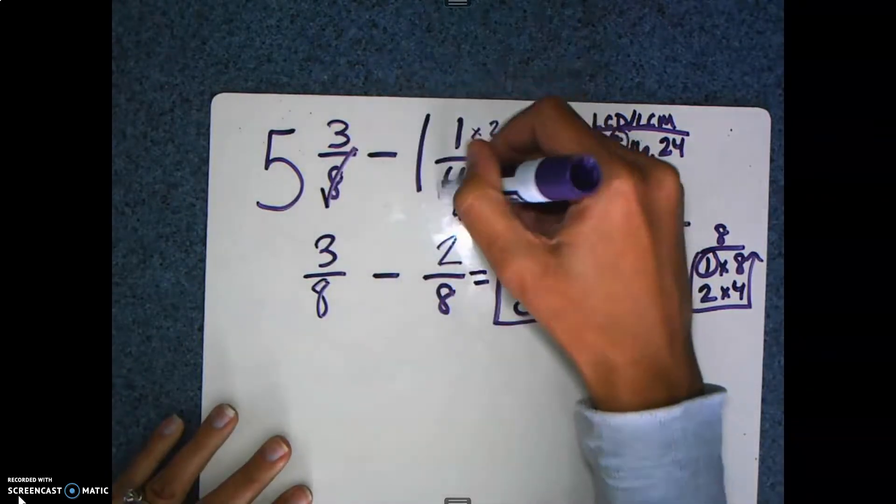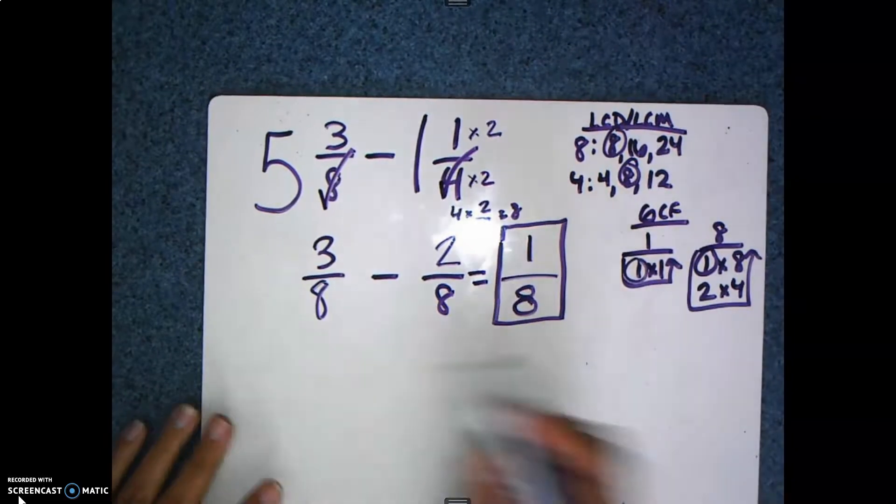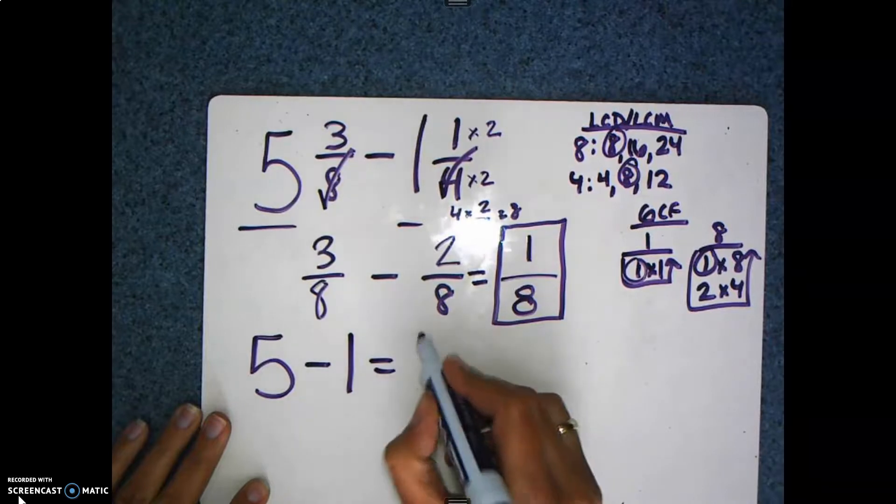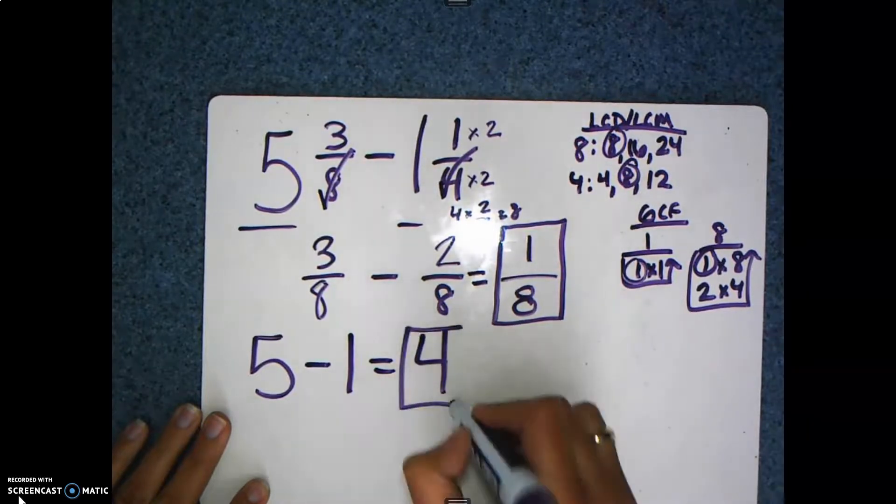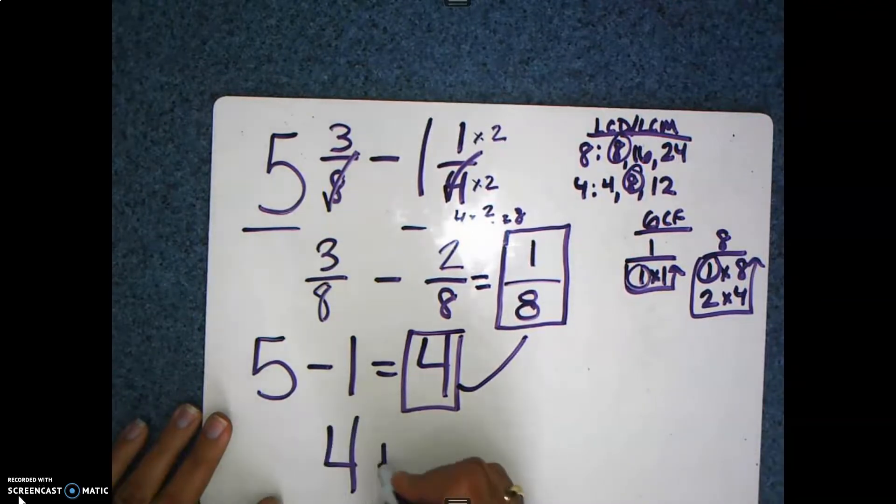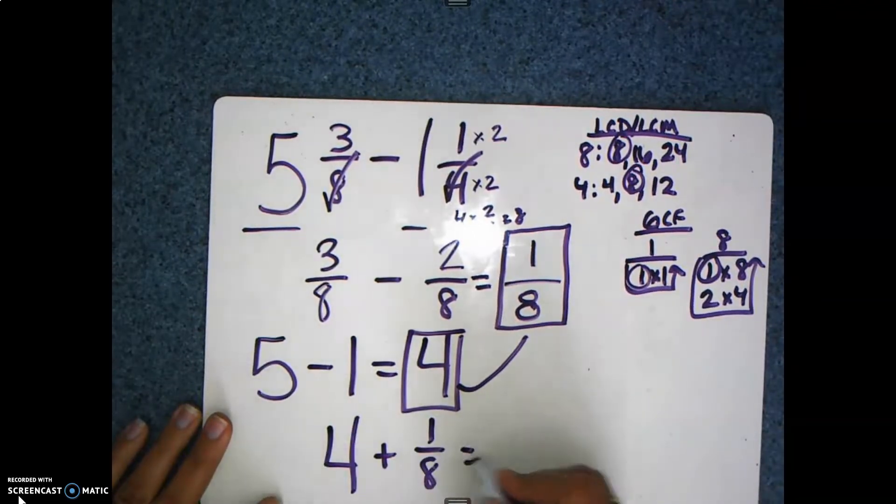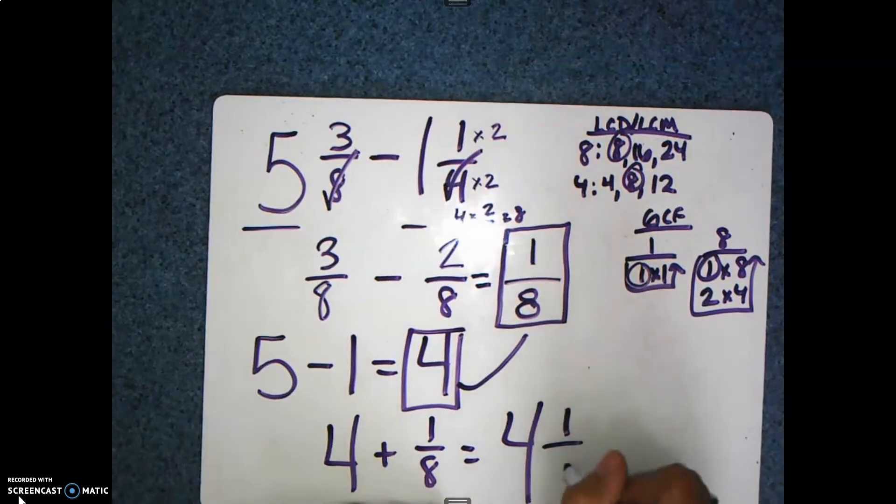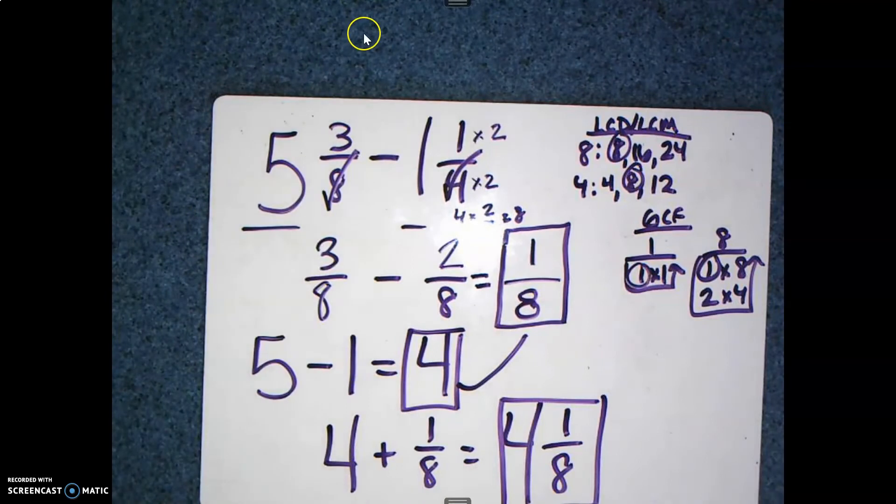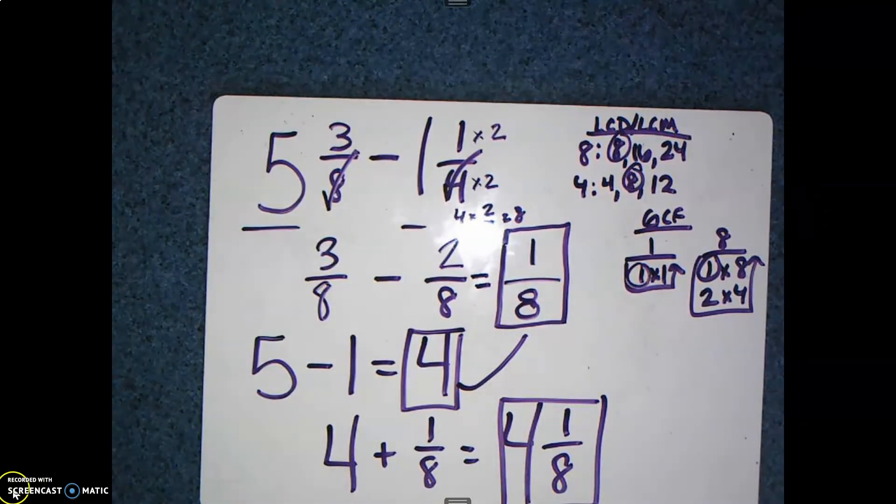So I've taken care of my fractions, checking those off. Now I need to do my whole number, subtract them. 5 minus 1 gives me 4. And I put these two back together again. So I get 4 plus ⅛. And our answer ends up being 4⅛. And that is how you add and subtract mixed numbers.